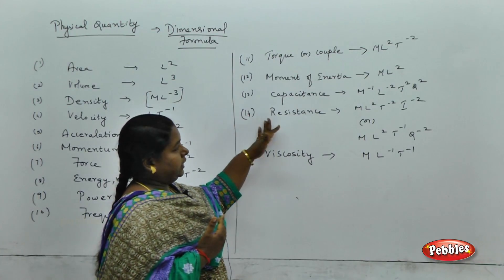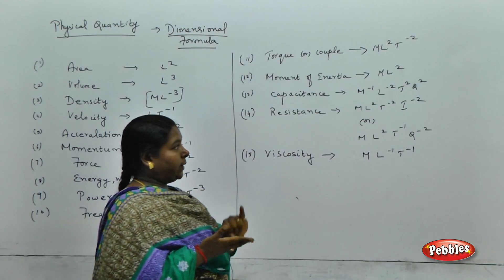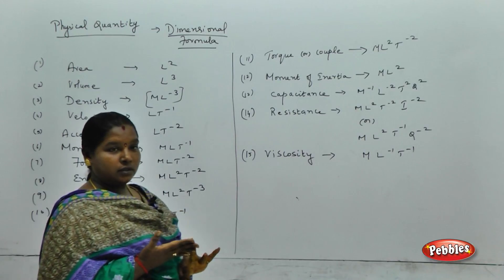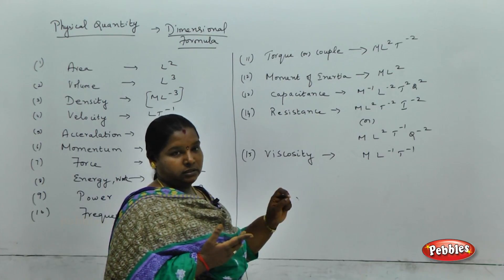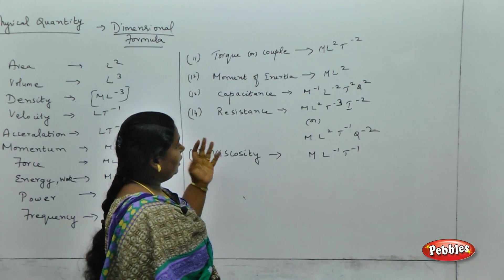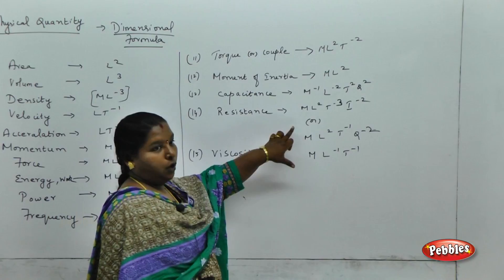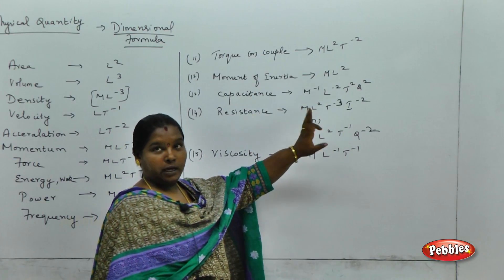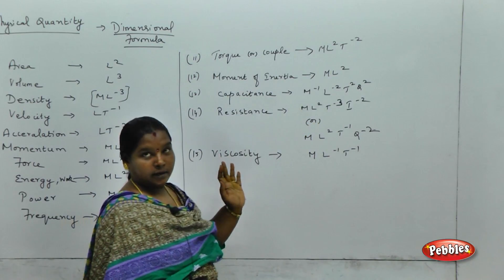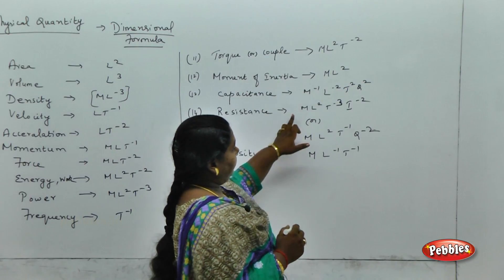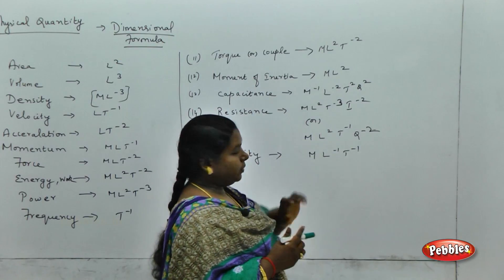Capacitance, resistance, and inductance are very important, especially in LCR series and parallel circuits. For resistance, the dimension can be written in two ways — one using Q (charge) and the other using I (current). The dimension is M L squared T minus 3 I to the power minus 2, or equivalently M L squared T to the power minus 1 Q to the power minus 2.